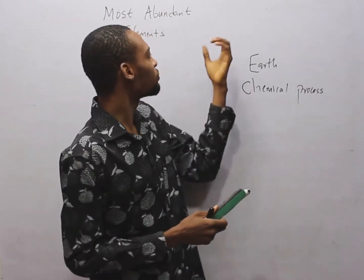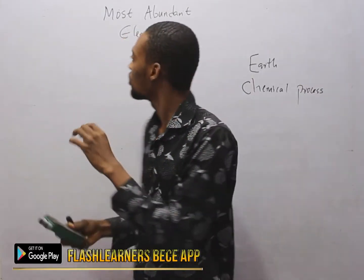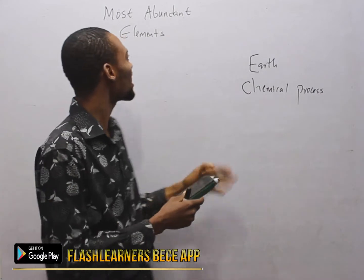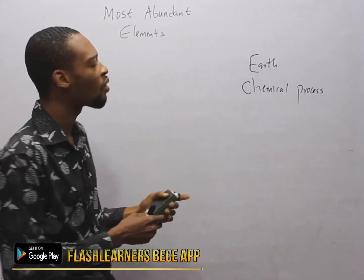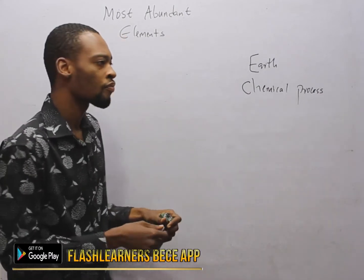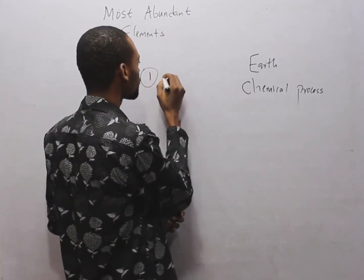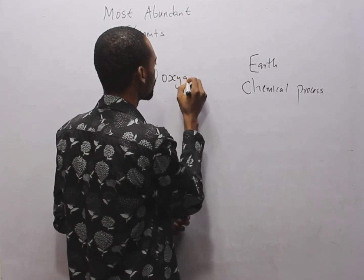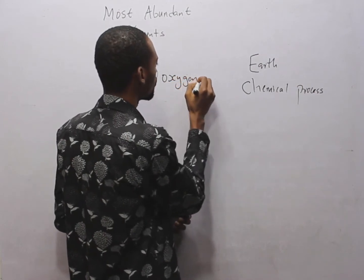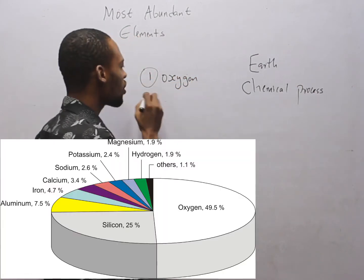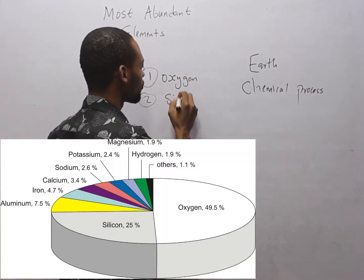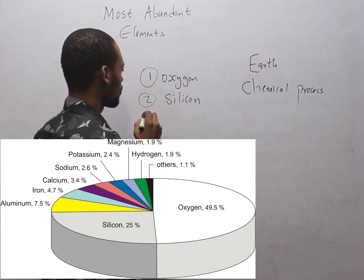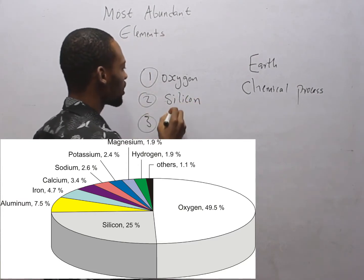So this brings us back to the topic. What are the most abundant elements on earth? The first one is oxygen, the second one is silicon, and the third one is aluminium.